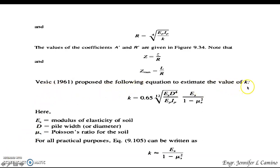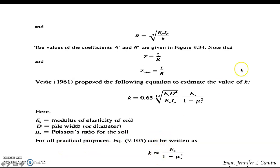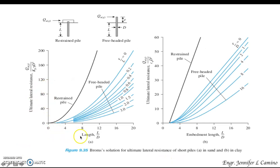This is a proposal from Reese to estimate the value of small k using the equation with a_s (modulus of elasticity of the soil), d (pile width or diameter), and Poisson's ratio for the soil. For practical purposes, k can be written in this simplified form.